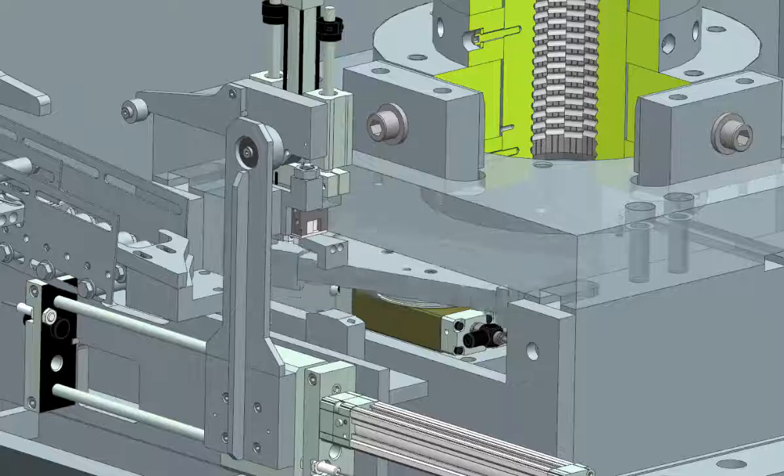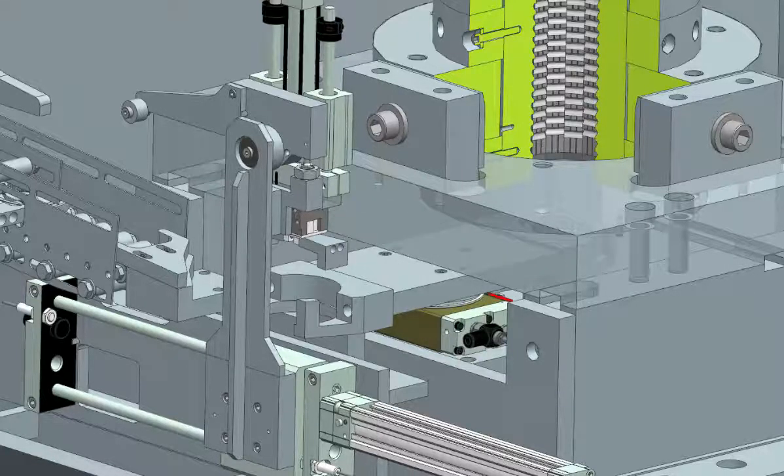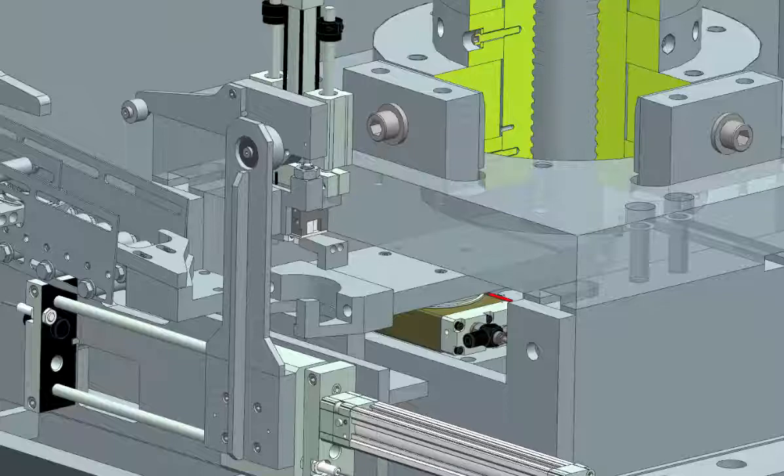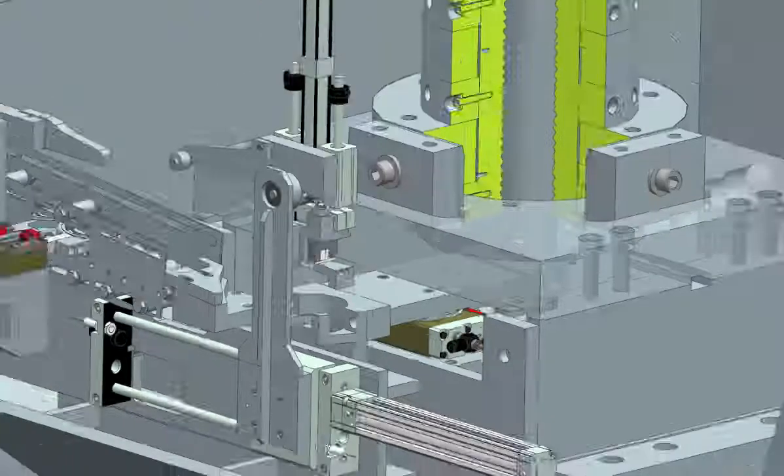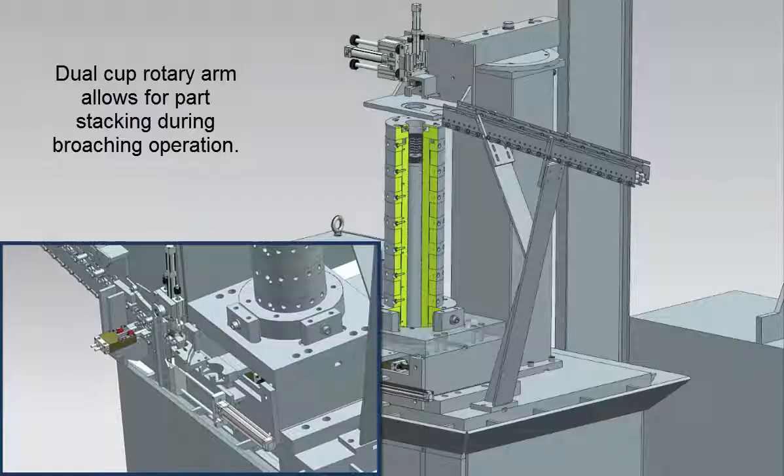The dual-cup rotary arm positions the parts under the pot broach while allowing parts stacking during the broaching operation. This, as well as broaching two parts at a time, allows for a faster overall cycle time.